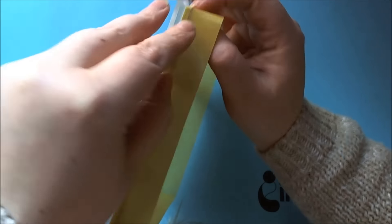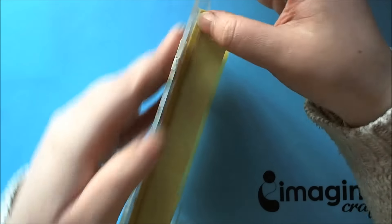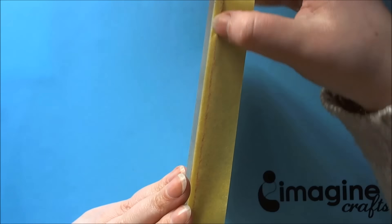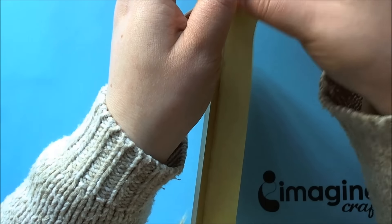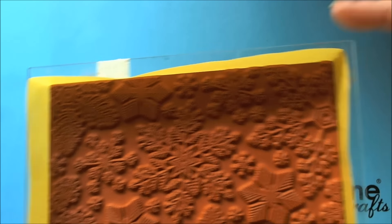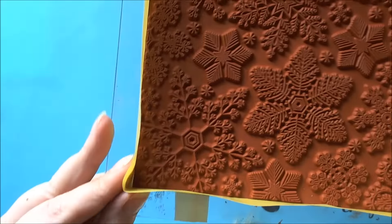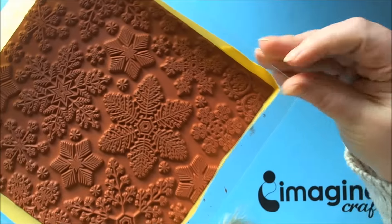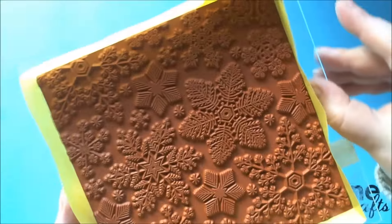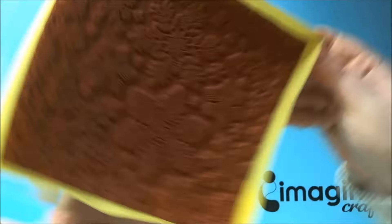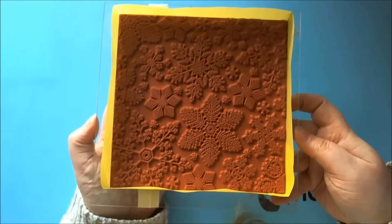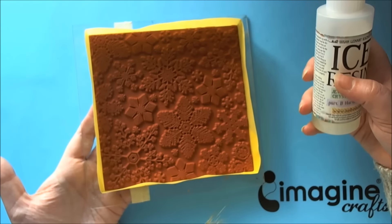You want to repeat this process on all four sides. Your finished piece should look like this, you should have solid walls and they should be straight as straight as you can get them. Extra burnish does help. And then the next step is to mix our resin so I'll be back with mixed resin in a minute.